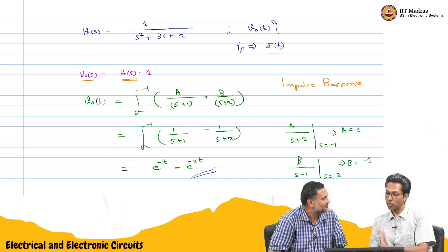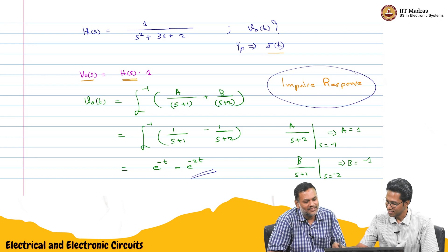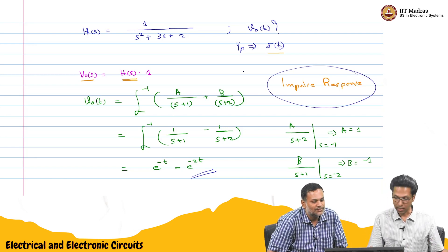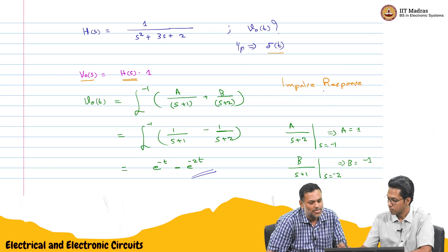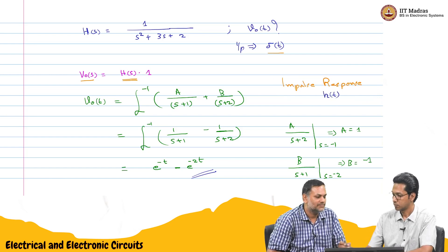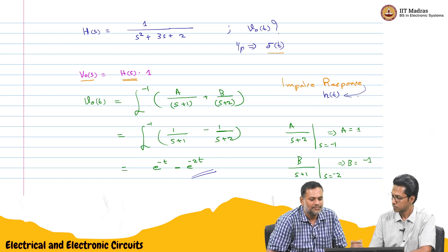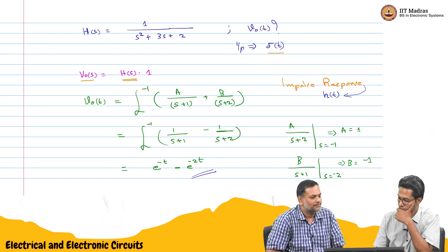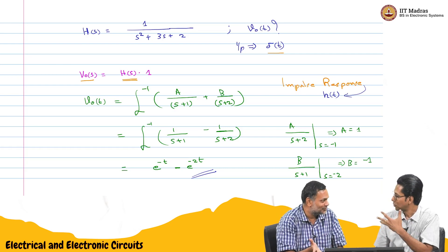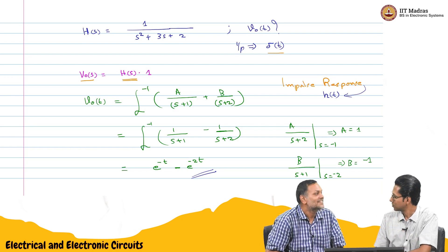But one thing we learned interesting is this. It is basically h of t, small h of t. We can just write it there, small h of t for our reference. Again, students will learn more about this in future courses, signals and systems.